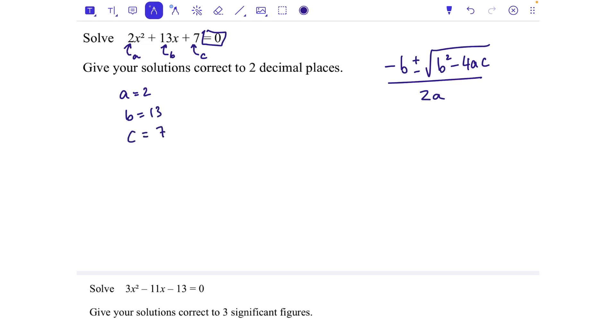I'm then just going to put that in my formula. So minus minus 13 plus or minus the square root of 13 squared minus 4 times 2 times 7, all over 2 times 2.